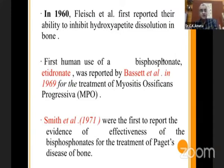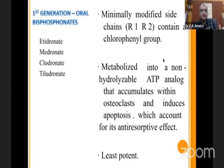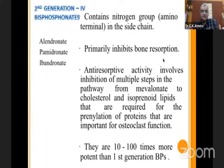Bisphosphonates were first reported in 1960, and first used in myositis ossificans in 1969 and 1971. First-generation bisphosphonates have a chlorophenyl chain and are metabolized to non-hydrolysable ATP analogs that accumulate in osteoclasts, inducing osteoclast apoptosis, which accounts for their anti-resorptive effect. However, these first-generation agents are least potent. Second-generation bisphosphonates contain a nitrogen group and act at multiple steps in the mevalonate pathway — from mevalonate to cholesterol to isoprenoid lipids — required for prenylation of proteins important for osteoclast function. They are 10 to 100 times more potent than first-generation bisphosphonates, and include alendronate, pamidronate, and ibandronate.